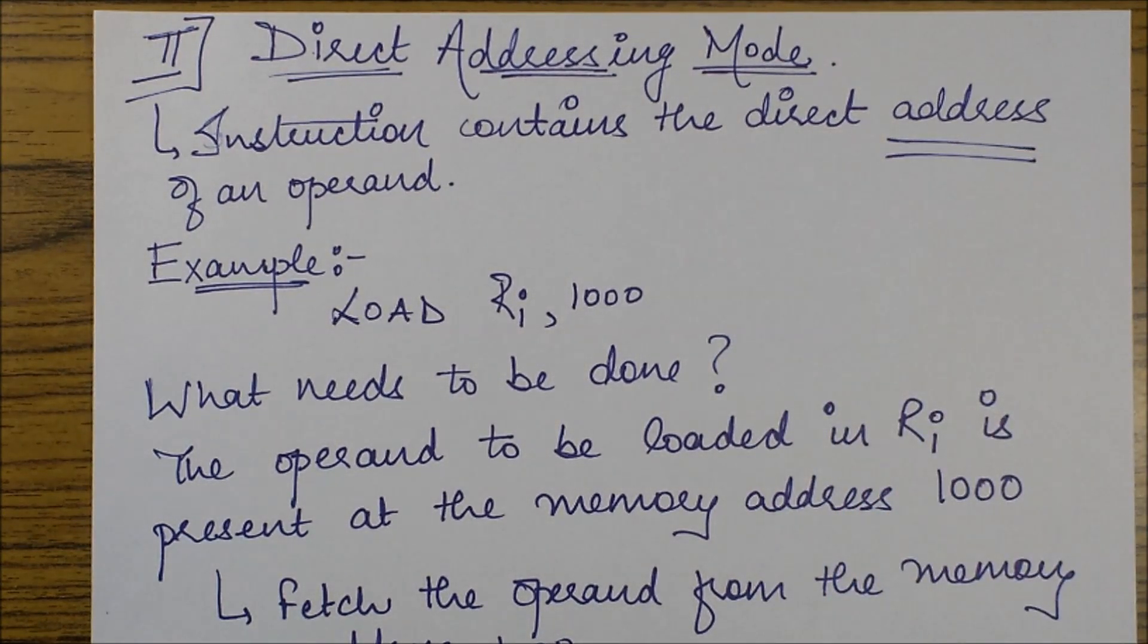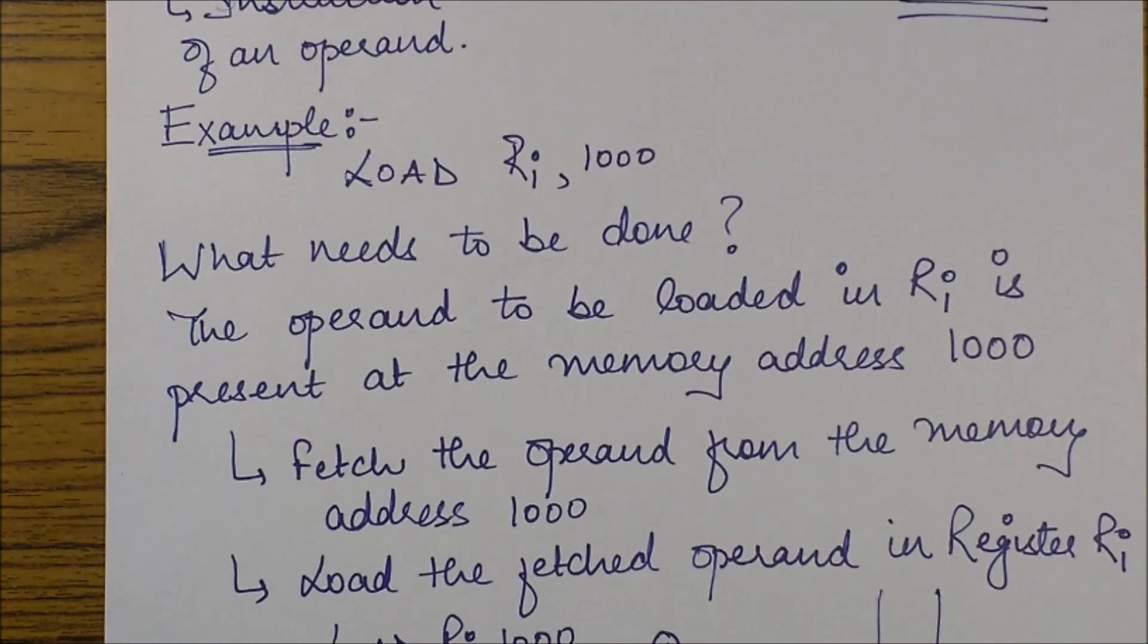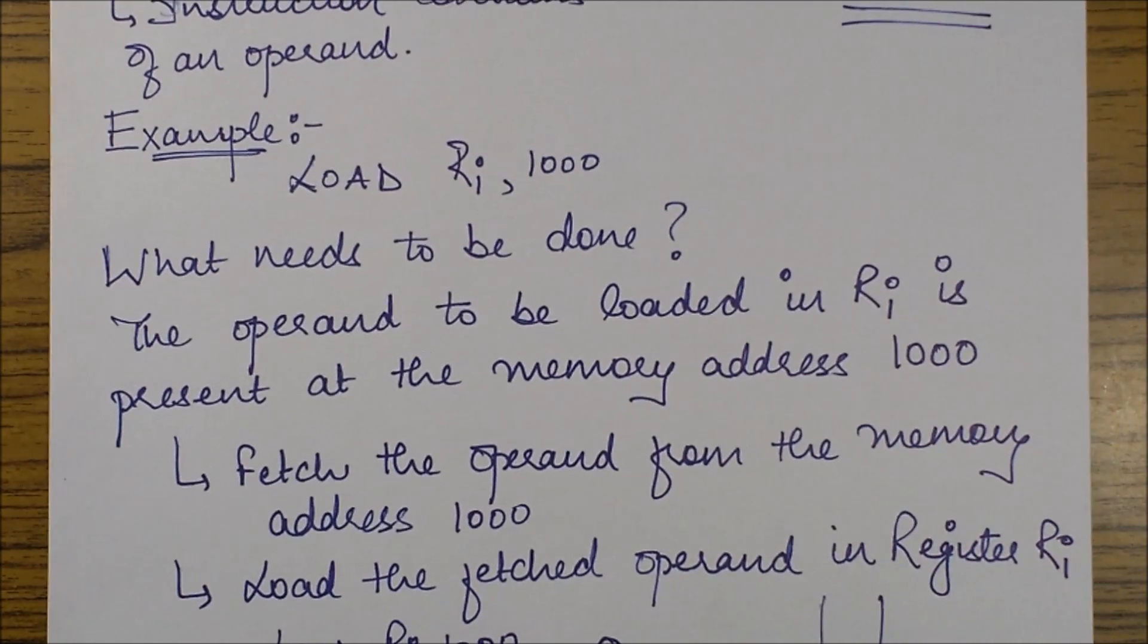We are provided with the address of the operand but not with the value of the operand. So we'll have to fetch that value. So what is the example of this sort of instruction?